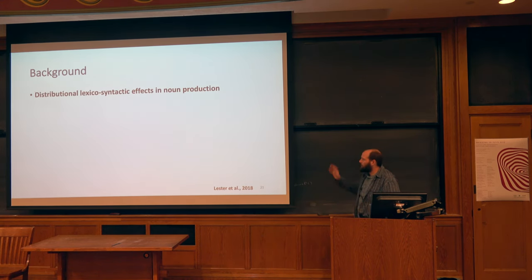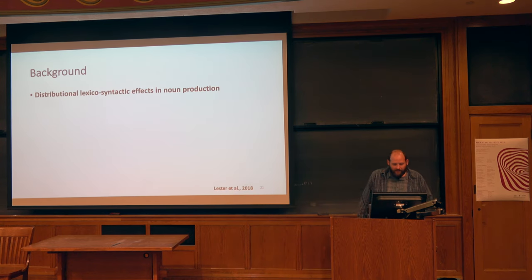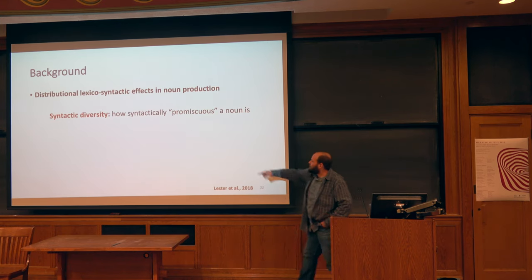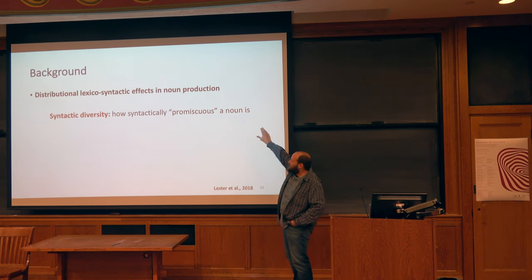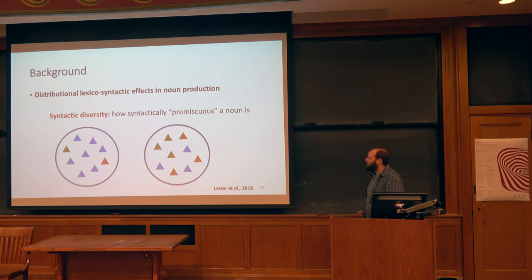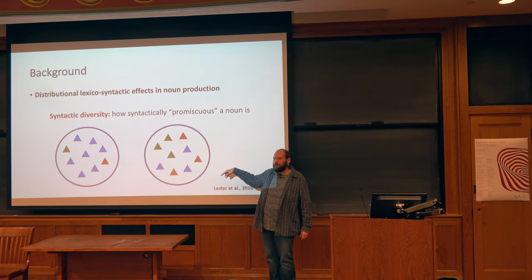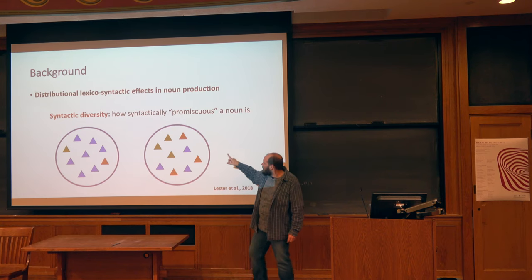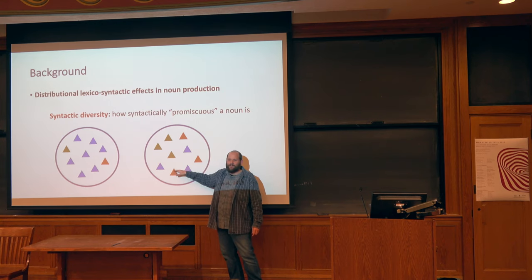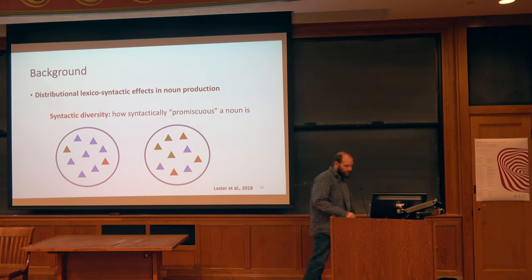Why do I focus on these distributional properties? There was a study in 2018 looking at some effects on production of nouns. This study looked at something called syntactic diversity — you can call it how syntactically promiscuous a noun is. To illustrate: is the left one more diverse or the right? They have the same number of triangles, same number of colors, but this one has more individuals from each type and they're equally distributed. So this is what we would call a high entropy condition. We're measuring this with respect to the relationship between words and syntactic structures.